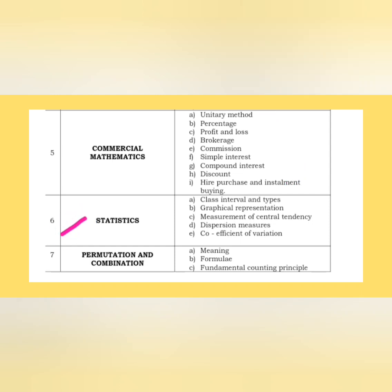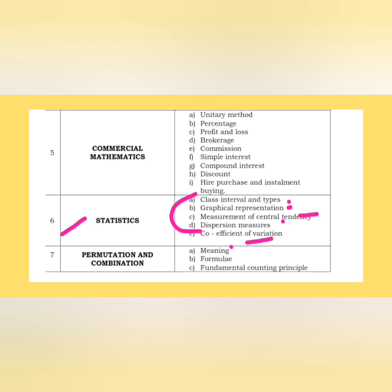Moving to statistics. Most concepts are already covered for the GPSR exam: class interval, types, graphical representation, measurement of central tendency. Now focus additionally on dispersion measures and coefficient of variation. Next, permutation and combination: meaning, formula, fundamental counting principle — an entire video is already made, check the channel playlist — and factorial notation.